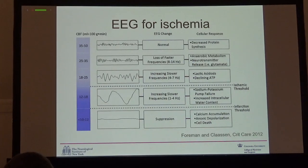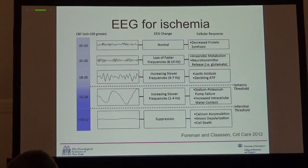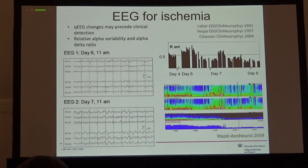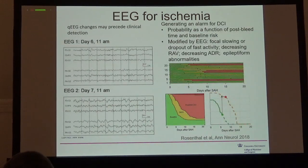Now briefly about ischemia. EEG has an interesting feature: normal blood flow to the brain is 35 to 50 mL per 100g of brain per minute, and as you decrease blood flow the EEG changes in a rather predictable way. That allows you to use EEG as a detector of ischemia. A number of studies have examined quantitative EEG features to detect ischemia in real time.